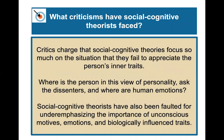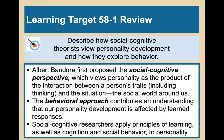What criticisms have social cognitive theorists faced? Critics charge that social cognitive theories focus so much on the situation that they fail to appreciate inner traits, which research — especially behavioral genetics — shows are very important. The question is: where is the person in the view of personality, and where are human emotions? Social cognitive theorists have also been faulted for under-emphasizing the importance of unconscious motives, emotions, and biologically influenced traits.